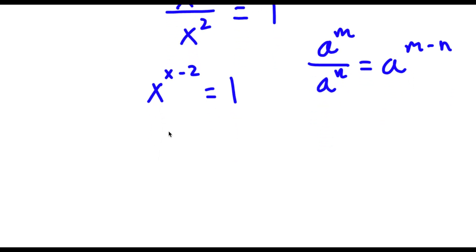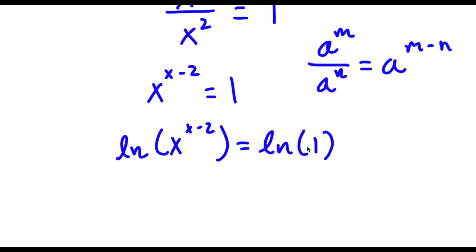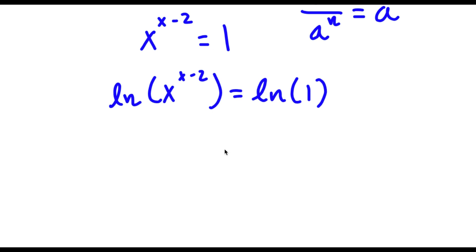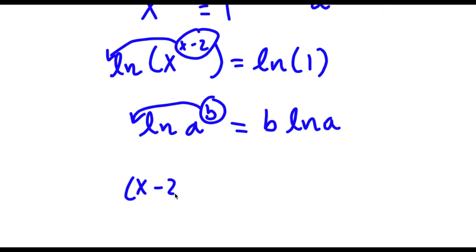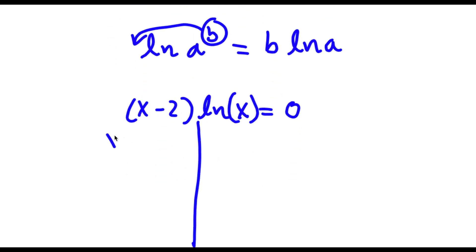Now I take the natural log on both sides: ln of x to the power of x minus 2 equals ln 1. Using the logarithm power rule, if I have ln of a to the power of b, I can move the exponent b to the front, so this equals b times ln a. So I can move x minus 2 to the front, giving x minus 2 times ln x equals ln 1, which equals 0. This gives me two equations.